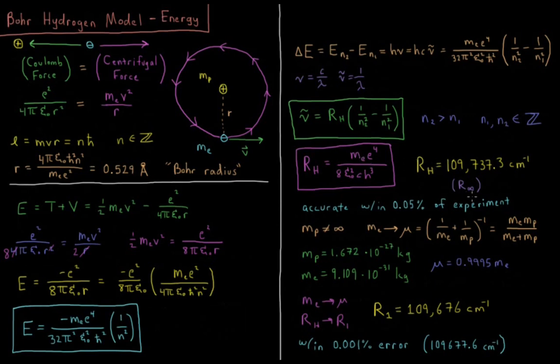This is the actual analytic value of what we call the Rydberg constant r h, or what we might refer to as r infinity for what we'll see in a second, and this is accurate to within 0.05% of experiment. The Rydberg constant that we got from experiment from previous videos was 109,677.6 wavenumbers, inverse centimeters, 1 over distance.